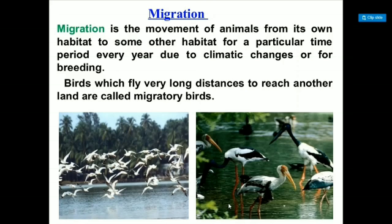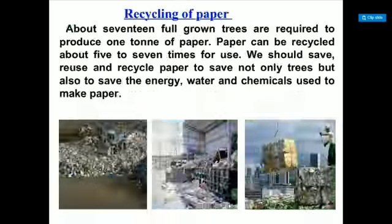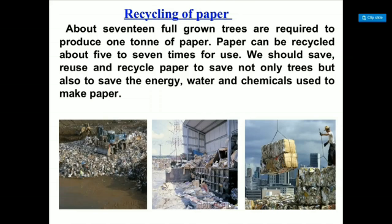The three Rs are Recycling, Reuse, and Reduce. About 17 full-grown trees are required to produce one ton of paper. Paper can be recycled about five to seven times. We should save, reuse, and recycle paper to save not only trees but also the energy, water, and chemicals used to make paper. Students, don't throw or tear paper unnecessarily.